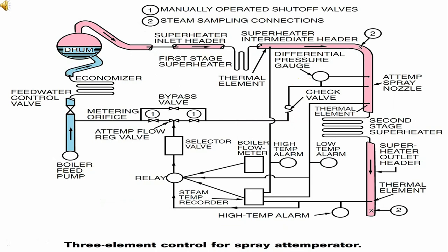Here again, we describe the passage of steam from the steam drum in a slightly different way. The steam goes to the first stage superheater, then to the second stage superheater. In between, there is a temperator spray nozzle, with water for spray coming from the boiler feed pump. After the secondary superheater, the steam goes to the steam outlet header.